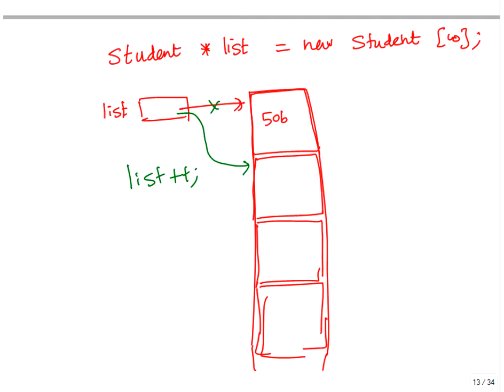One last thing: maybe I can show minus minus too. At this point, if you do list--, it will go back. It's going to go back to the original one, because the address is reduced by 50 bytes. So reverse of ++. That's the main thing about pointer arithmetic.